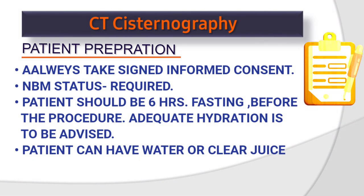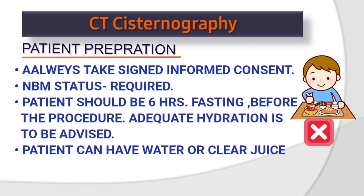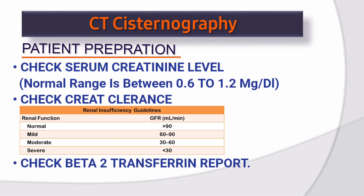Patient preparation. Always take signed informed consent. NBM status is required — patient should be 6 hours fasting before the procedure. Adequate hydration is to be advised; patient can have water or clear juice. Check serum creatinine level — normal range is 0.6 to 1.2. Check creatinine clearance. Renal insufficiency guideline: normal GFR above 90, mild 60–90, moderate 30–60, severe below 30.